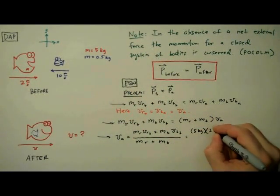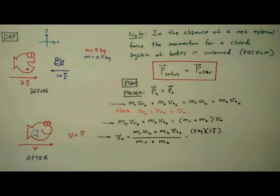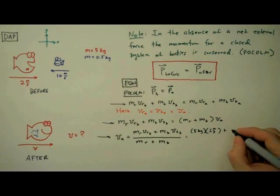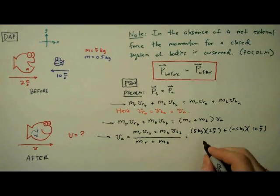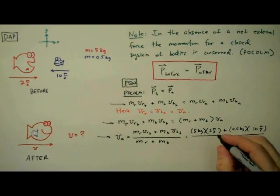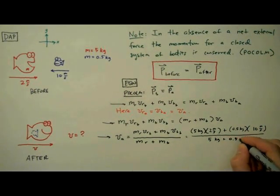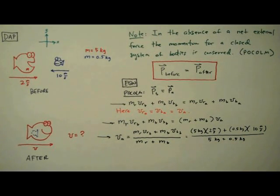Next we insert our initial conditions. I have 5 kilograms times 2 meters per second for the red fish and 1.5 kilogram times 10 meters per second for the blue fish divided by 5 kilograms plus 1.5 kilogram. So we get the velocity of the two fish after the collision is equal to 2.7 meters per second.